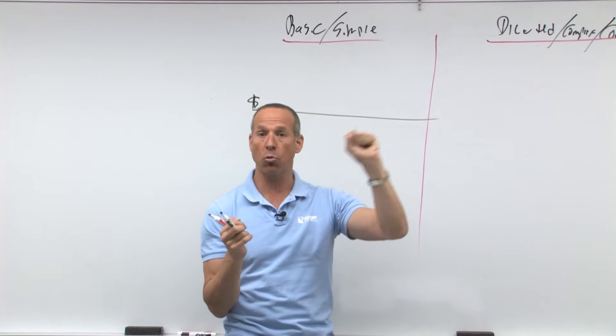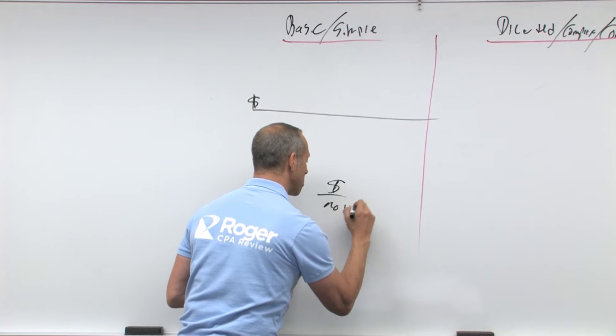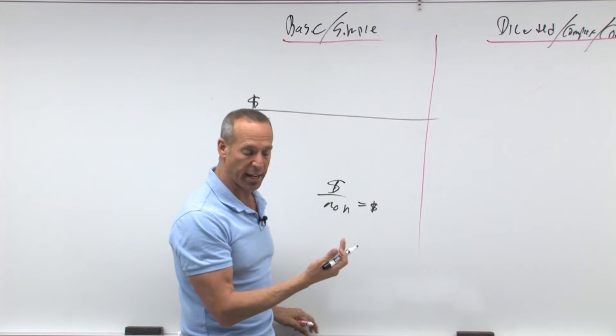So there's something per share. It's dollars divided by something equals dollars. So dollars over shares equals dollars per share. That's what we're going to be trying to calculate.